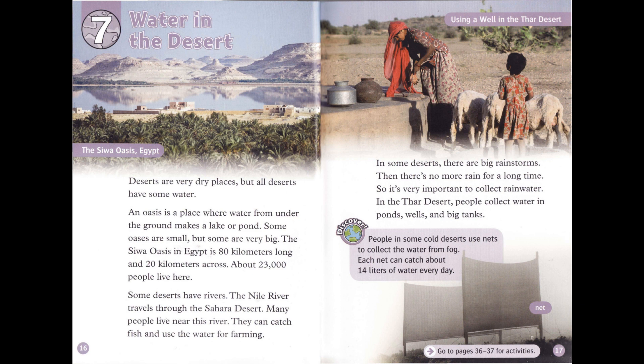In some deserts there are big rainstorms, then no more rain for a long time, so it's very important to collect rainwater. In the Tar Desert, people collect water in ponds, wells, and big tanks. Discover: People in some cold deserts use nets to collect water from fog. Each net can catch about 14 liters of water every day.